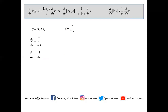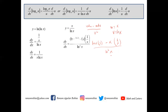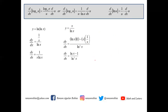Find dy/dx if y equals x over ln x. Since this is a quotient, we use the quotient rule: (v du minus u dv) over v², where u equals x and v equals ln x. This gives ln x times 1 minus x times (1/x), all over (ln x)². Simplifying, ln x minus 1 all over ln² x.